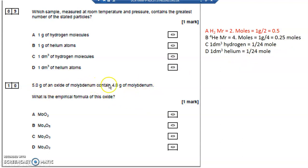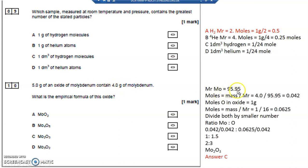5 grams of an oxide of molybdenum contains 4 grams of molybdenum. So I can look up the MR of molybdenum, 95.95. I can work out the number of moles of molybdenum in this oxide.